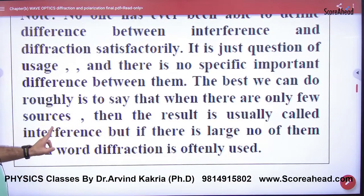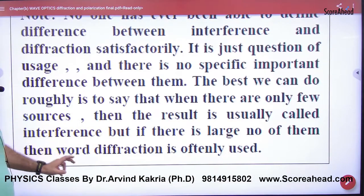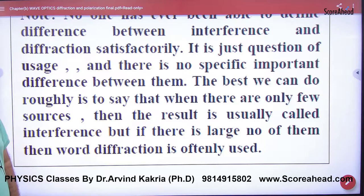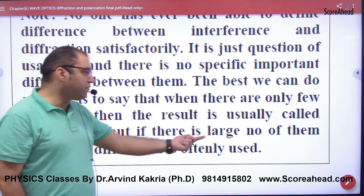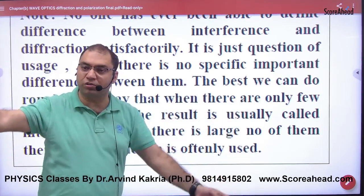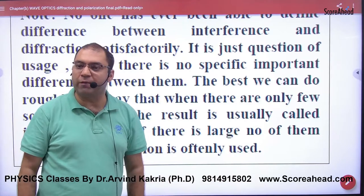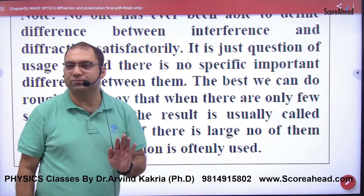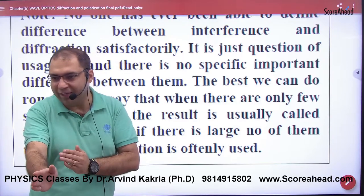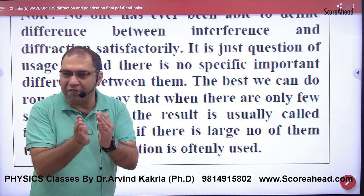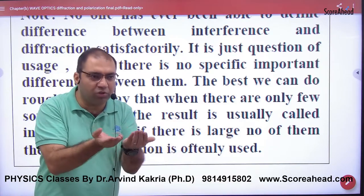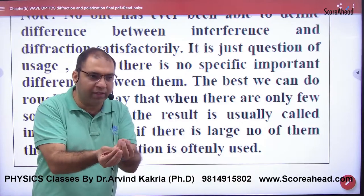There is no specific important difference between them. The best we can do roughly is to say: when there are only a few sources, we call it interference. When there are a large number of sources (large N), we call it diffraction. So actually, the difference is just a numbers game — large N means diffraction, and two sources means interference.